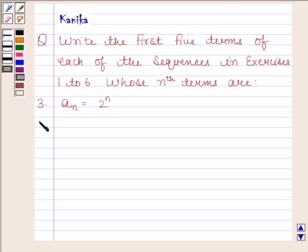Let's now begin with the solution. Given an = 2^n. Since we need to find the first five terms, we will put n = 1, 2, 3, 4, and 5.